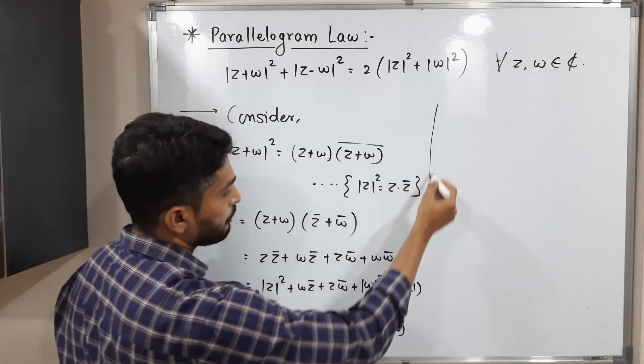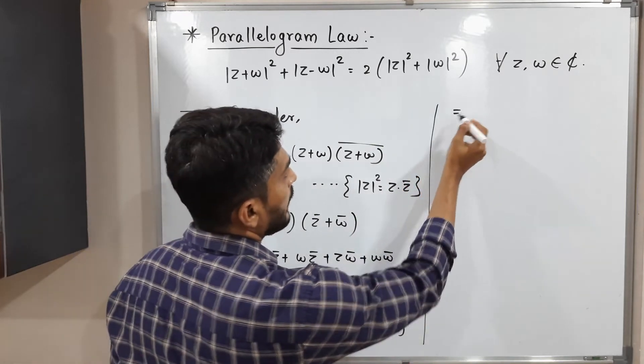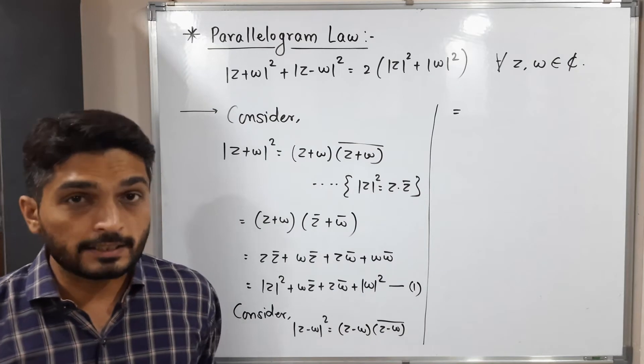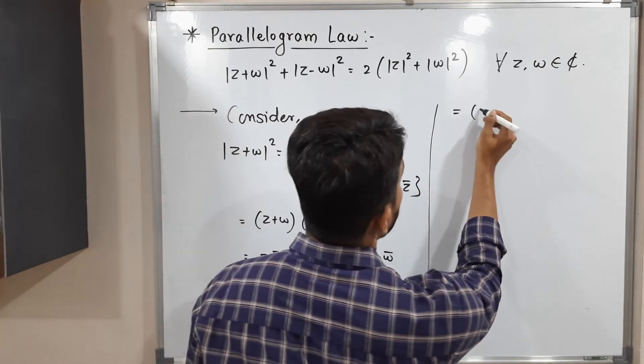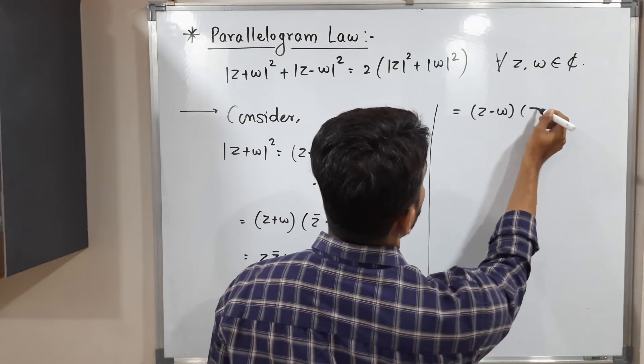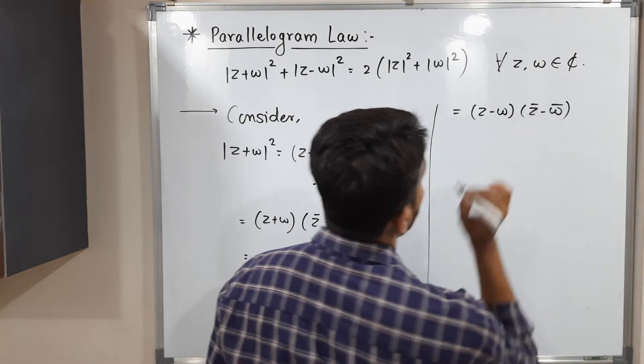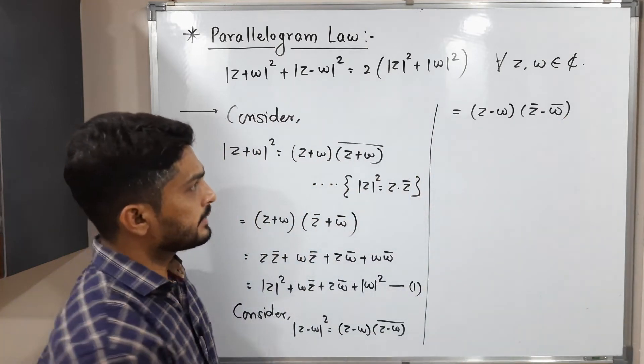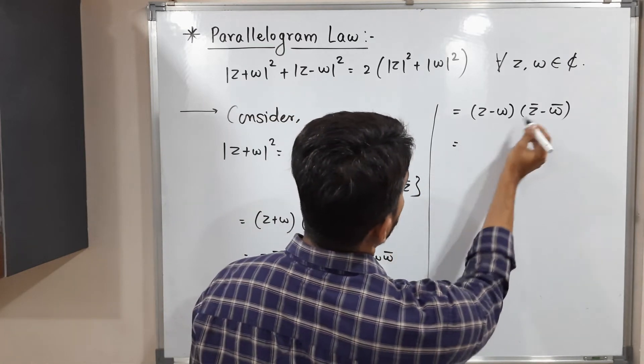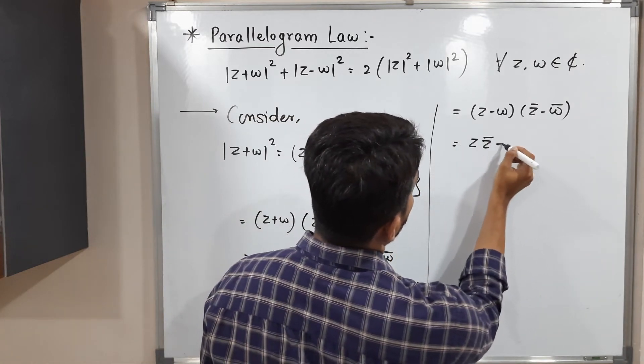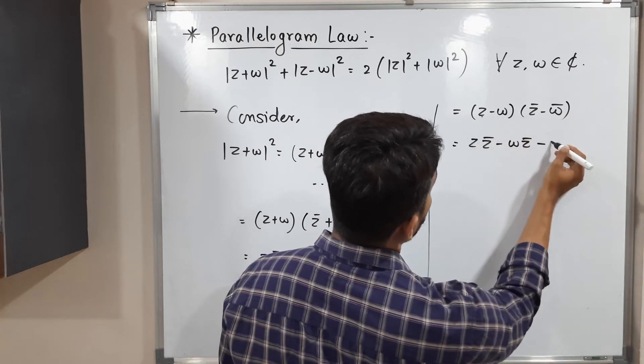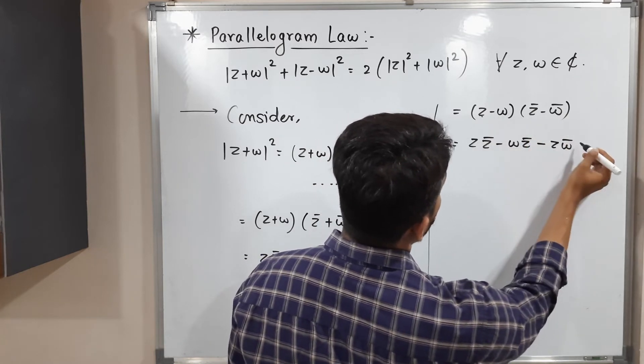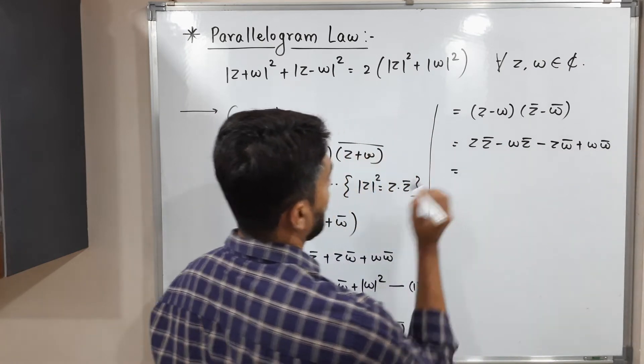Okay, so let us go further. As I told you earlier, if minus sign is there, we can take separate separate bar. So therefore, z minus w into z bar minus w bar. Let us take the product and find a value. z into z bar, we will have minus w into z bar, minus z into w bar minus minus plus w into w bar.